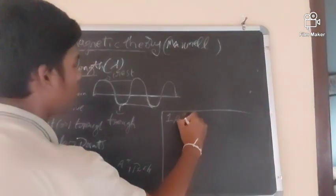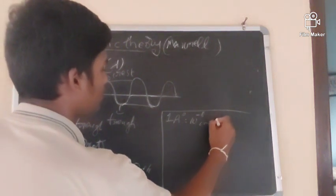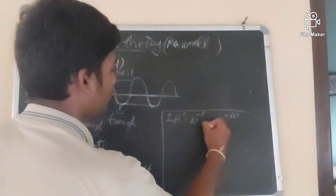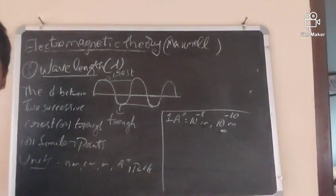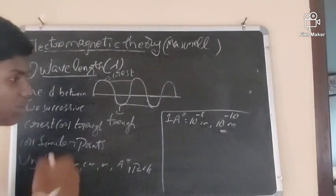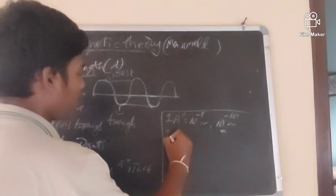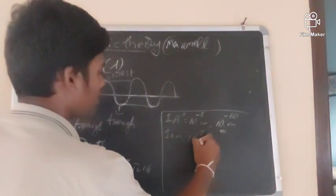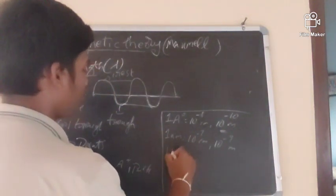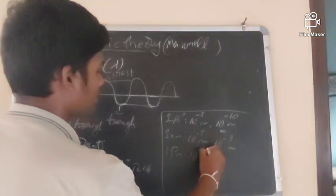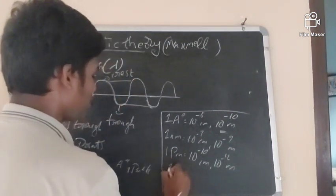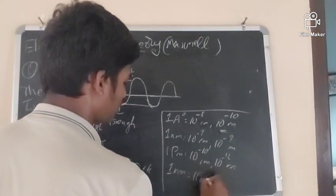One angstrom equals 10⁻⁸ centimeters, or 10⁻¹⁰ meters. One nanometer equals 10⁻⁷ centimeters, or 10⁻⁹ meters. One picometer equals 10⁻¹⁰ centimeters, or 10⁻¹² meters. Also, one nanometer equals 10 angstroms.